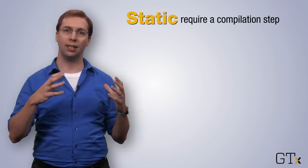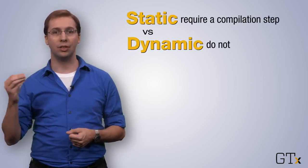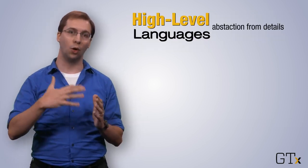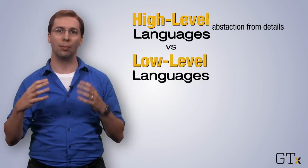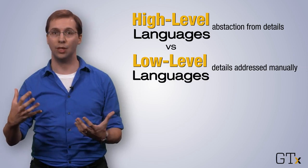There are a lot of ways to categorize programming languages. For example, static languages require a compilation step, while dynamic languages don't. High level languages involve a great deal of abstraction away from the low level details of the computer, like memory, whereas low level languages require programmers to do a lot more of those things manually.